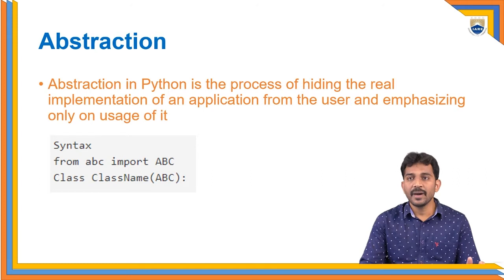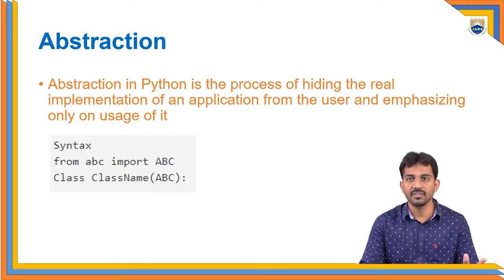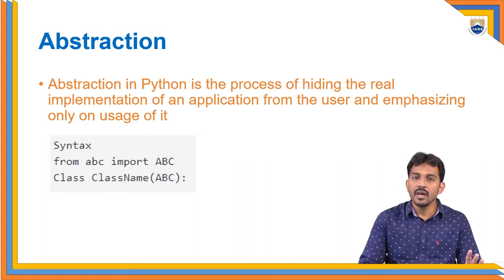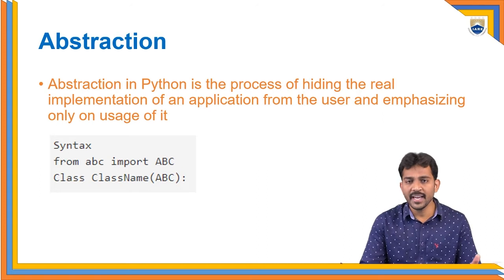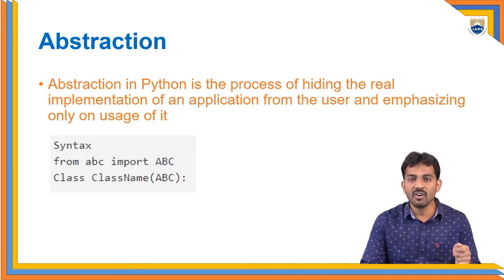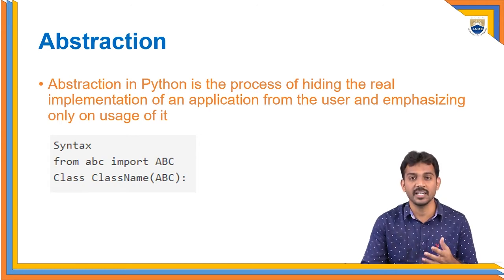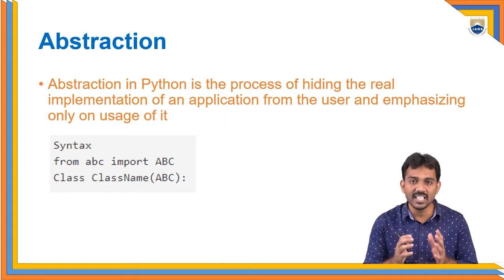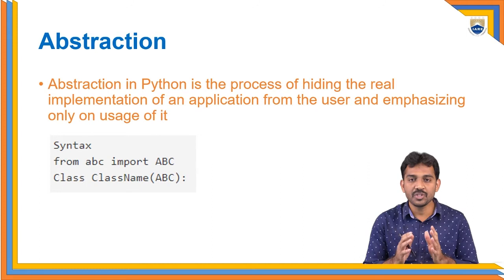Abstraction means Python is a process of hiding a real-world implementation of an application from the user and emphasizing only its usage. For example, if you observe the ATM machine, you don't know the inside process of withdrawing money. You only know that if you insert a card and enter the proper PIN, you get your money — but you don't know what the process is inside. That is hiding — the real-world implementation is hidden from the user.